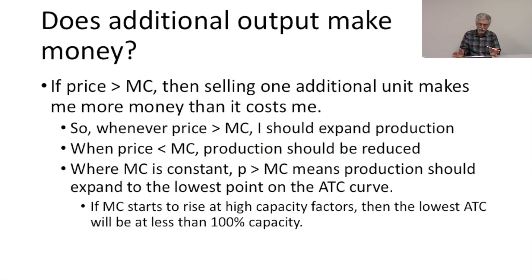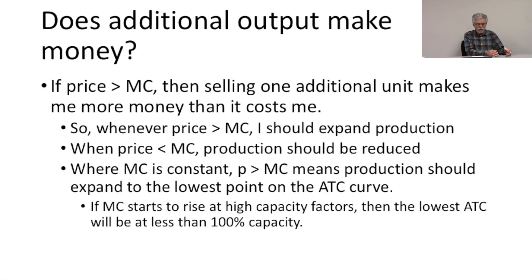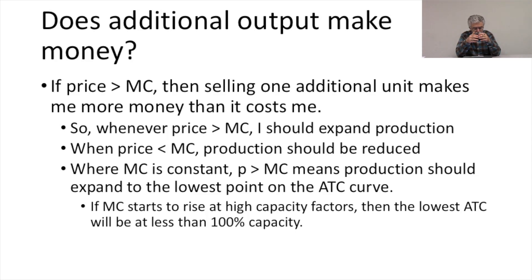So does additional output make you money? Our rule is we'll generate the additional megawatt hour whenever it makes us money. If the price is greater than the marginal cost, then selling one additional unit makes more money than it costs. So whenever price is greater than marginal cost, expand production. When price is below marginal cost, production should be reduced. When price equals marginal cost, keep it the same.